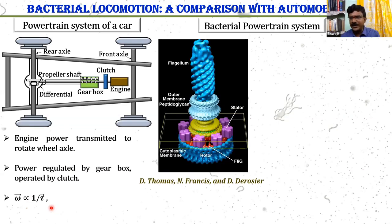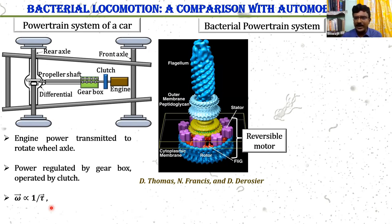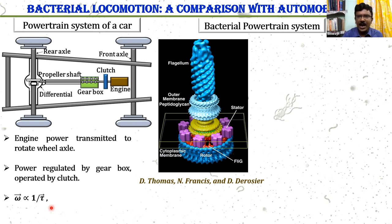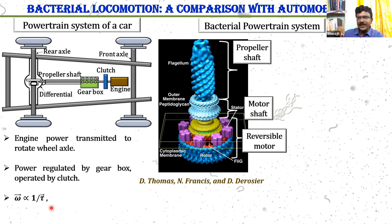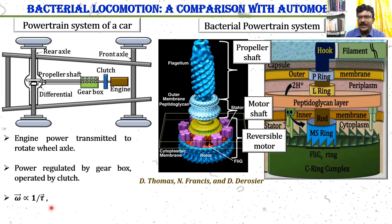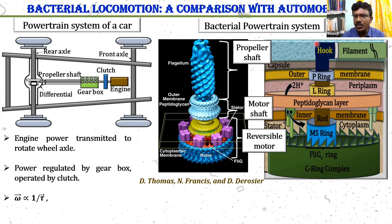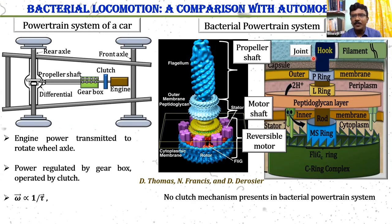If you see the bacterial powertrain system, it is composed with a reversible motor that rotates in clockwise and anti-clockwise directions. A motor shaft is connected with the propeller shaft. The rod acts as the motor shaft, and it is joined with the propeller shaft through the hook — which acts as a universal joint. In the bacterial powertrain system, there is no clutch.